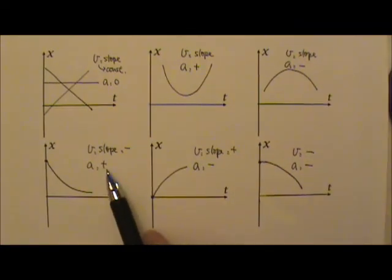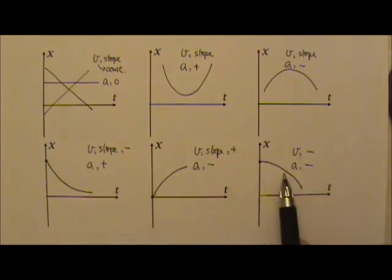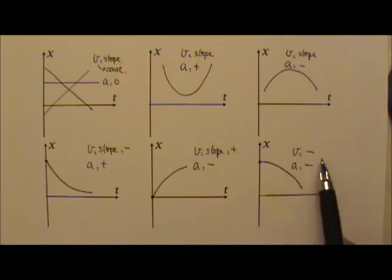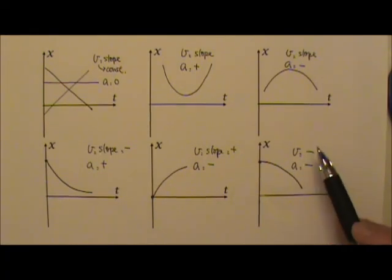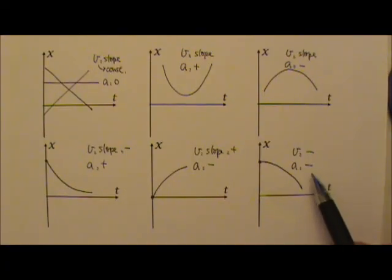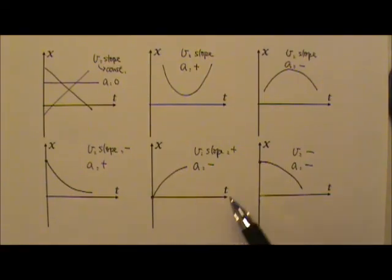So acceleration being positive does not guarantee the object is speeding up, and acceleration being negative does not guarantee the object is slowing down. It also depends on the sign of the velocity. If velocity and acceleration carry the same signs — same direction — the object is speeding up. If they carry opposite signs — opposite directions — the object is slowing down.